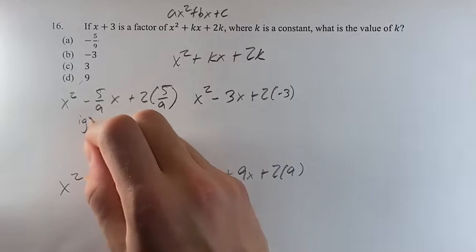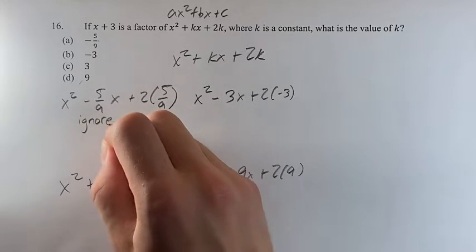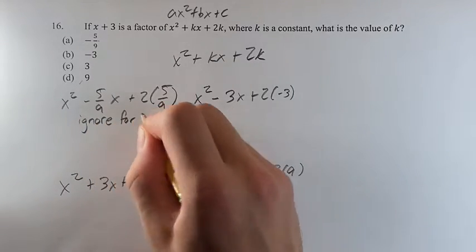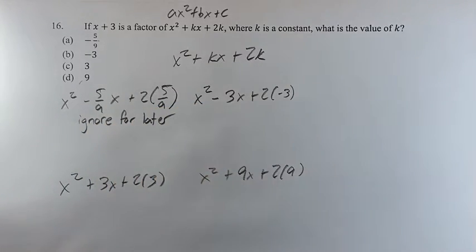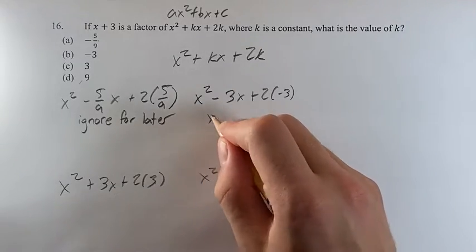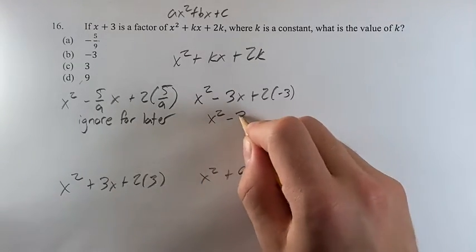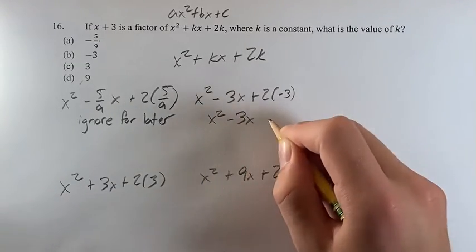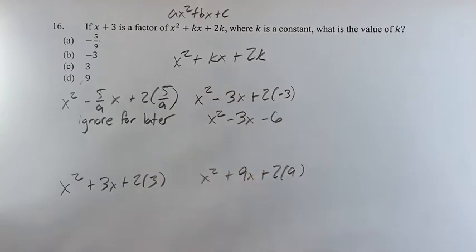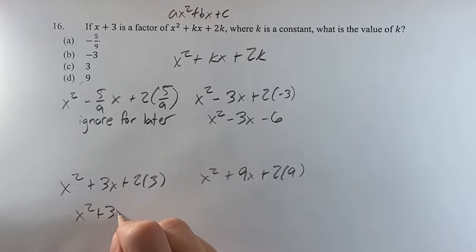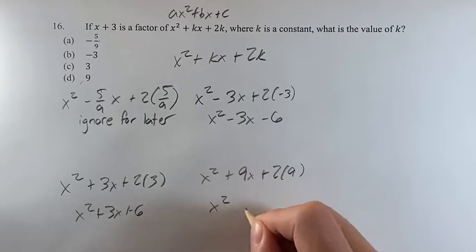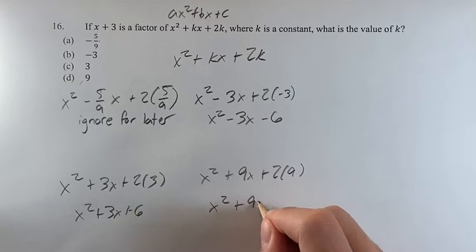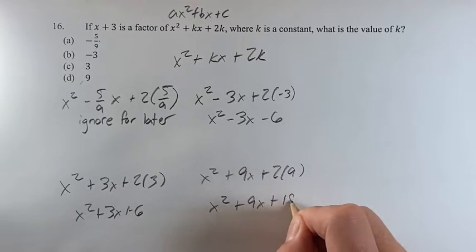This one — ignore for later; it involves fractions and I just don't really want to deal with that. This one gives x squared minus 3x minus 6. This one gives x squared plus 3x plus 6. And this one gives x squared plus 9x plus 18.